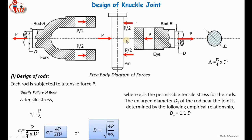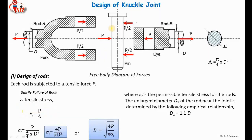This relative movement creates failure at two sections — double shear. The middle portion moves toward the right with the eye, and the upper and lower portions move toward the left with the fork. So double shear is the first possibility of failure of the pin.